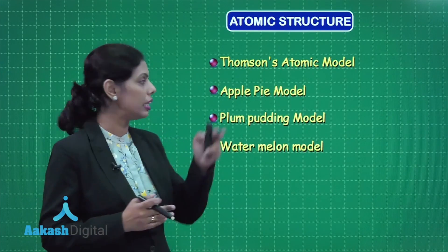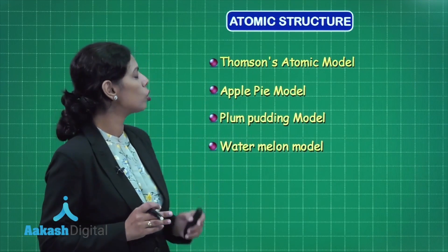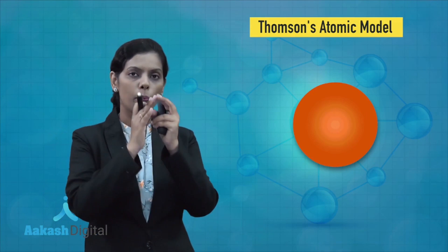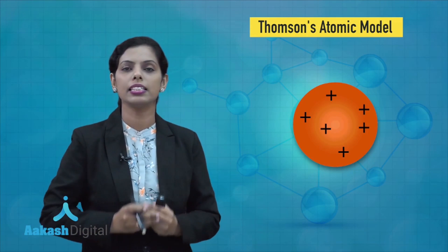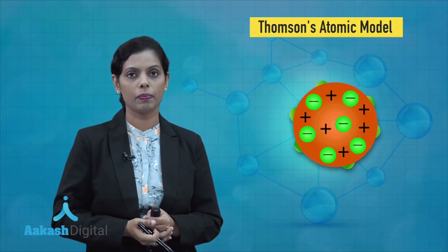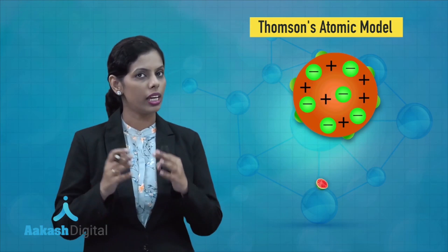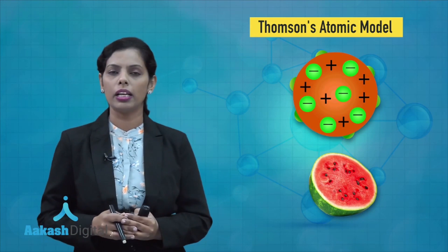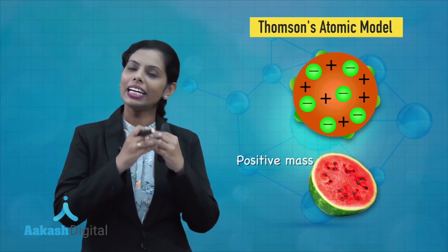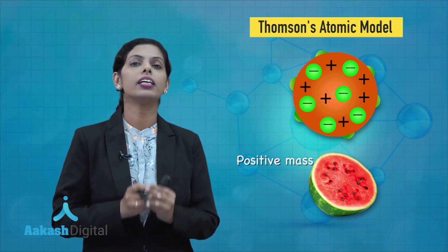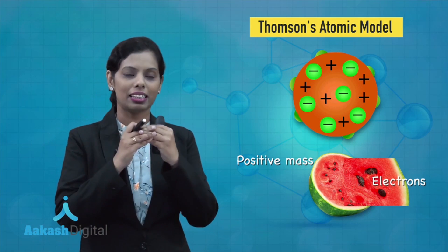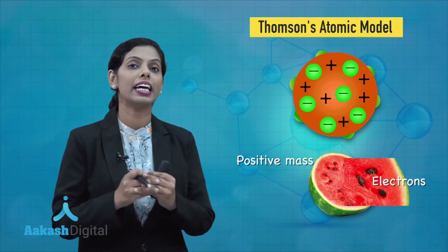The question arises: why are we using these names? Basically, Thomson's atomic model states that there is a positively charged mass, and in that positively charged mass, electrons are embedded. This can be understood with the help of a watermelon — the red part of the watermelon represents the positive mass, and the electrons are embedded in it like the seeds. The black seeds you can clearly see are showing that the electrons are embedded in the positive mass.